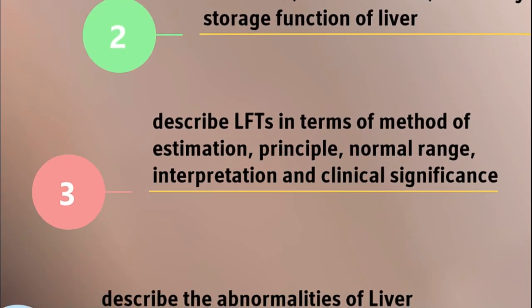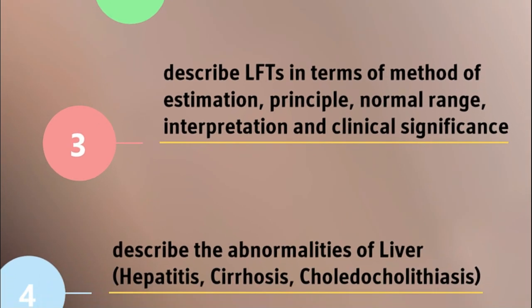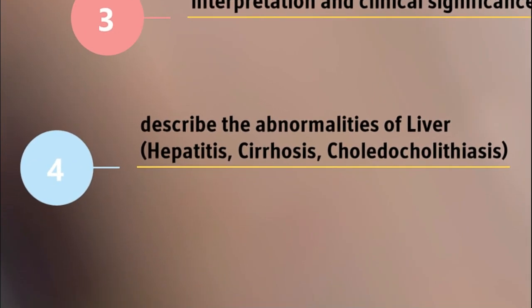Students should be able to describe liver function tests in terms of method of estimation, principle, normal ranges, interpretation, and clinical significance. Lastly, they shall be able to describe the abnormalities of the liver — specifically jaundice — differentiating between various types of jaundice, and the role of cirrhosis and choledocholithiasis in the development of jaundice.